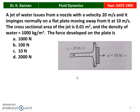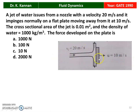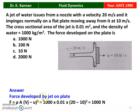Next question from the 1990 question paper: a jet of water issues from a nozzle with a velocity of 20 m/s and impinges normally on a flat plate moving away at 10 m/s. Cross-sectional area of the jet equals 0.01 m², density of water is 1000 kg/m³. The force developed on the plate: F equals rho × A × (Vj − U)² = 1000 × 0.01 × (20 − 10)² = 1000 N. The answer is 1000 Newton.